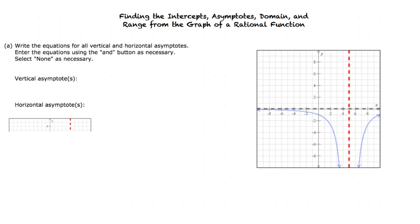Let's start by looking at part A, which asks us to write the equation for the vertical and horizontal asymptotes. An asymptote is a line that a curve approaches as it heads towards infinity. For the vertical asymptote, remember that vertical refers to up and down, so we are looking for asymptotes parallel to the y-axis. This graph decreases without bound towards negative infinity at x equals 5, so our vertical asymptote is x equals 5.